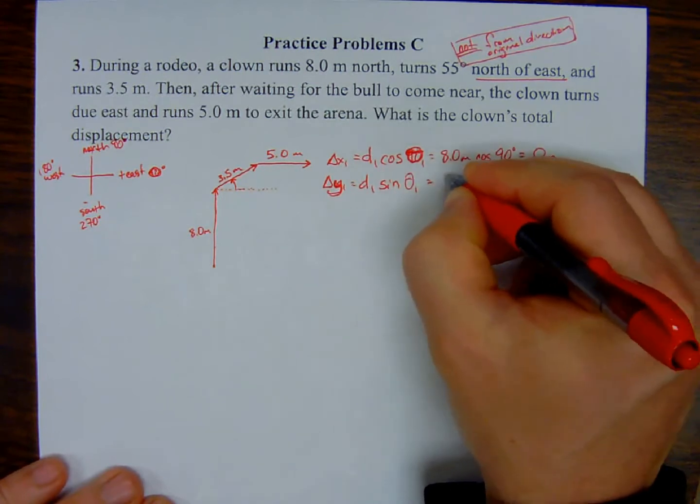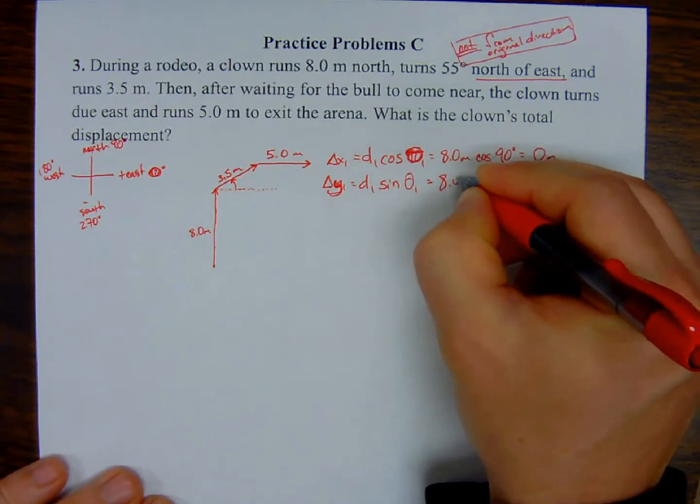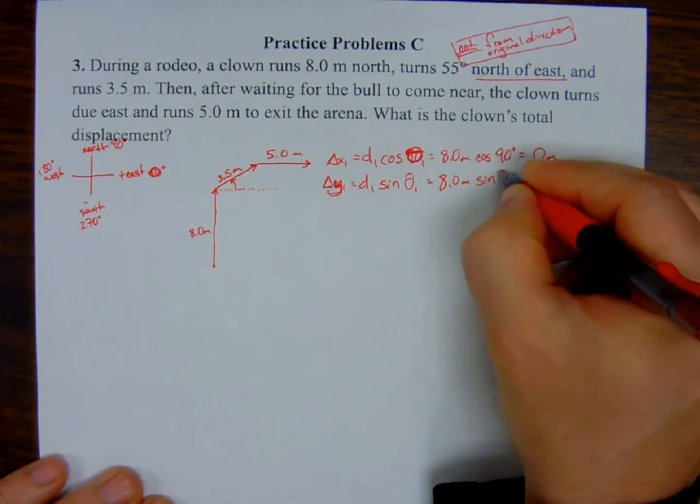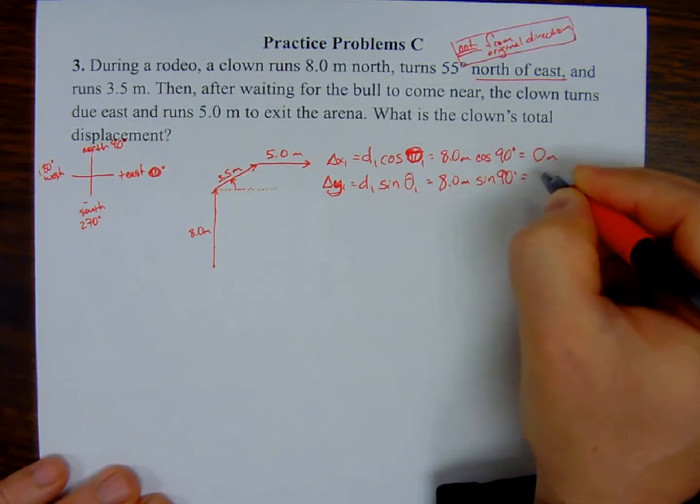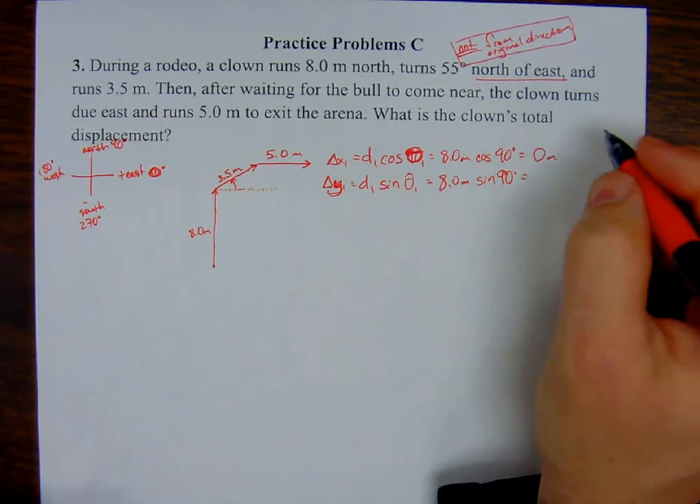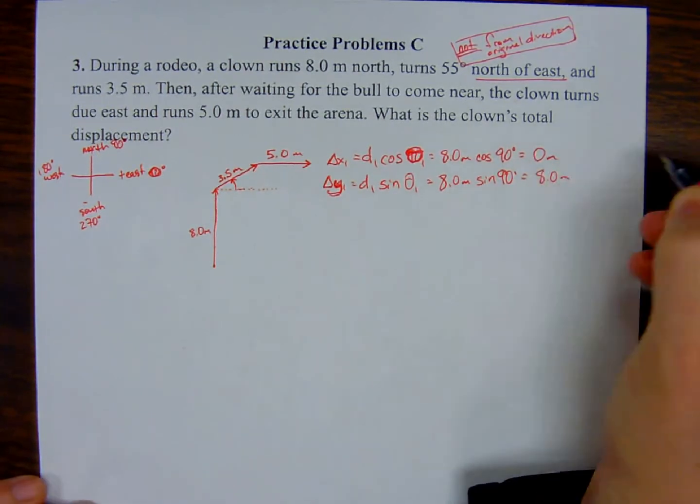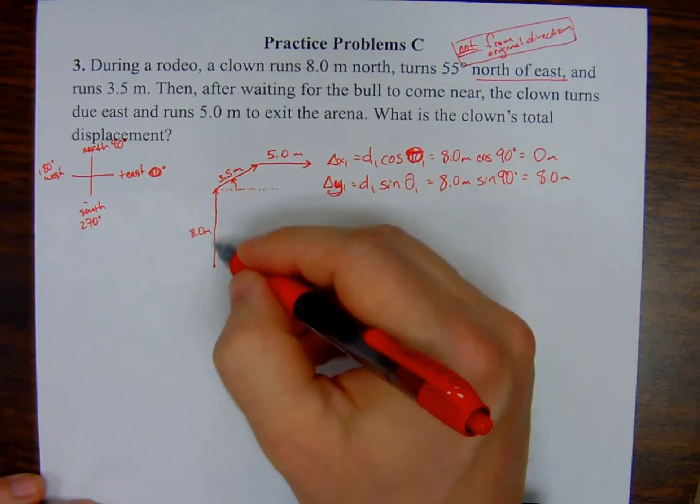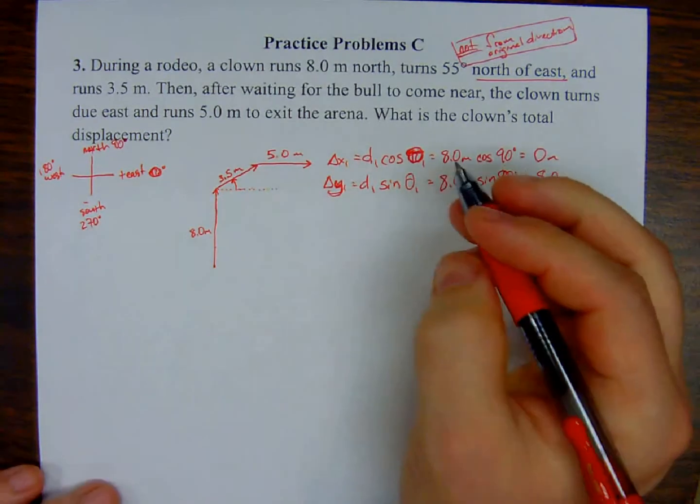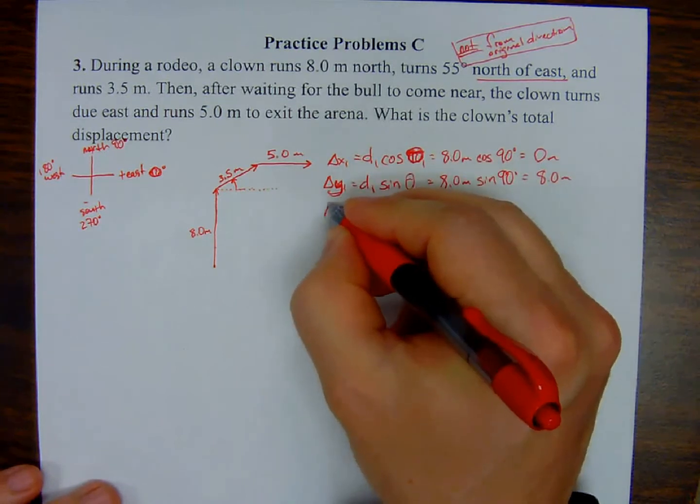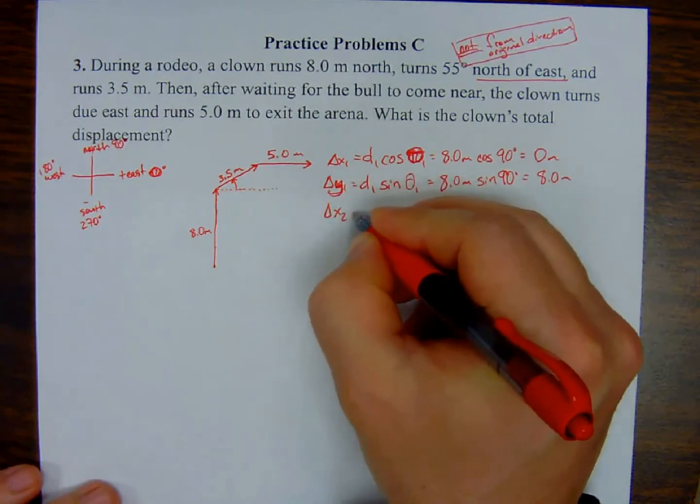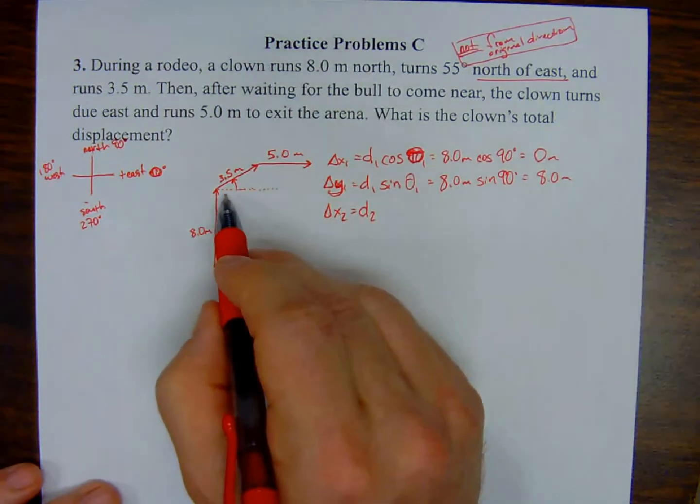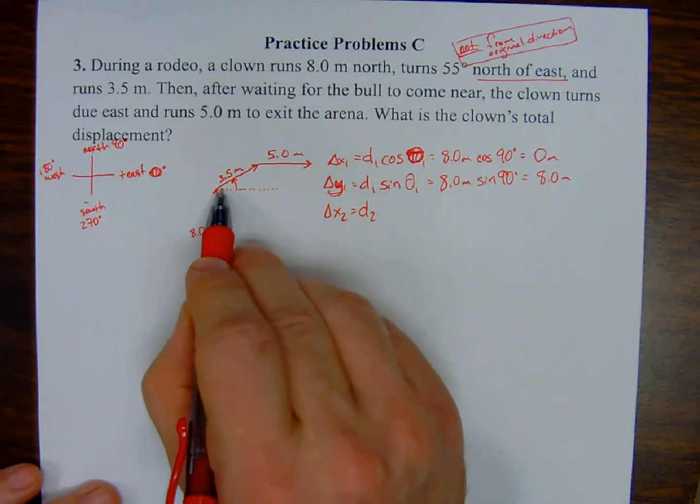Alright, let's try the second triangle. Again, the x component in that second triangle. Again, here's the angle, here's the angle. So it's adjacent over hypotenuse, that's going to be cosine of the second angle. Which ends up being 3.5 meters. What was that angle? 55 degrees. And it ends up being two significant figures, 2.0 meters.